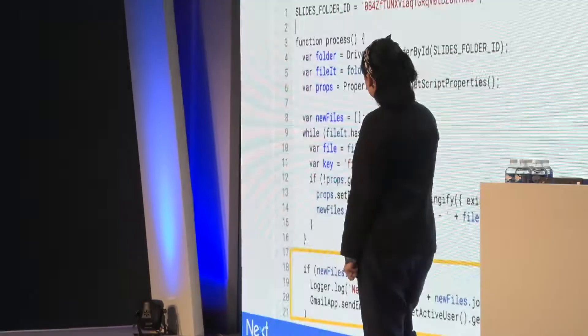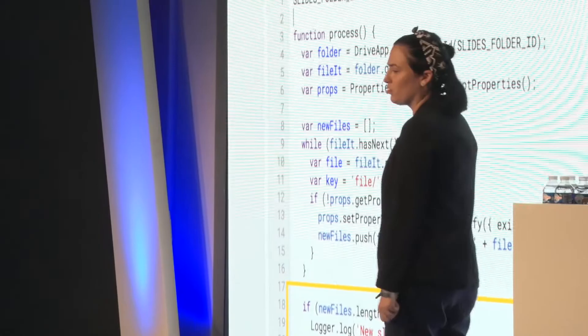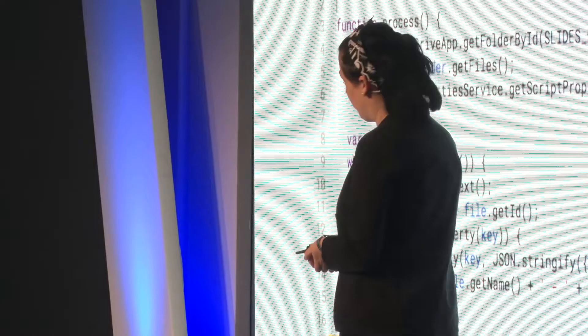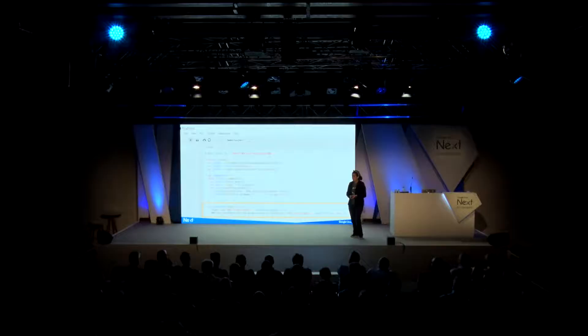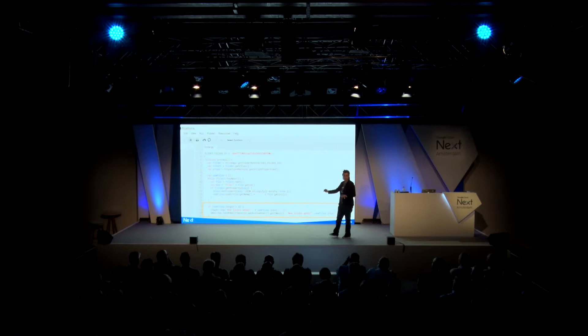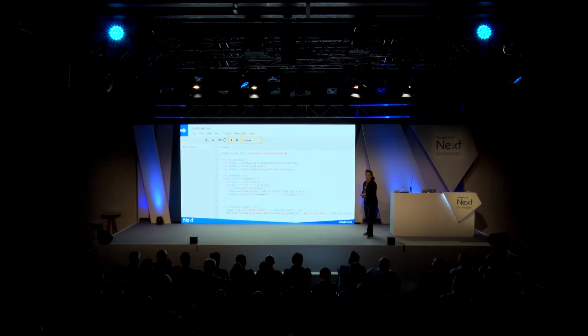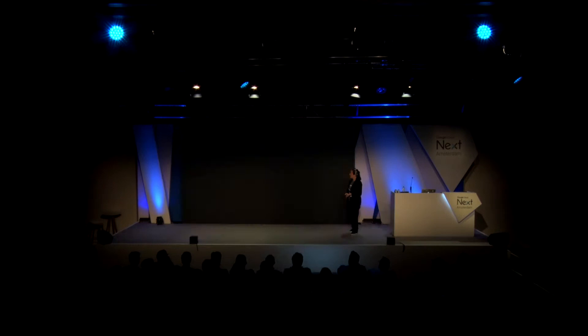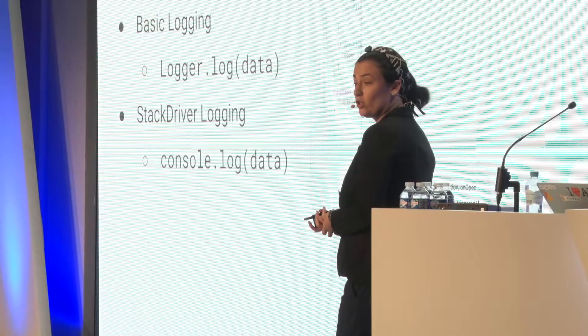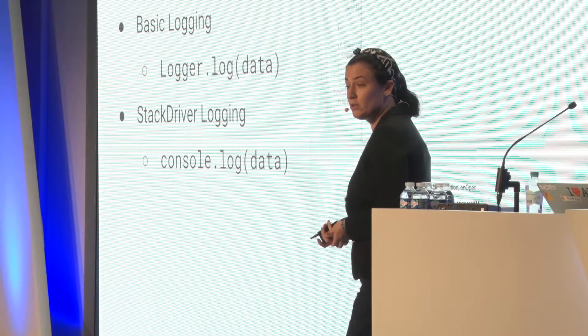The last piece of code checks if there are any new files, logs them using basic logging, and sends an email. The email is done through the email API - GmailApp.sendEmail() - sending to the active user with file.getName() and file.getURL(). You can press the Play button and see a log message in the basic log viewer. If you want something more advanced, you can use Stackdriver with console.log for much nicer, richer stack traces and better logging.